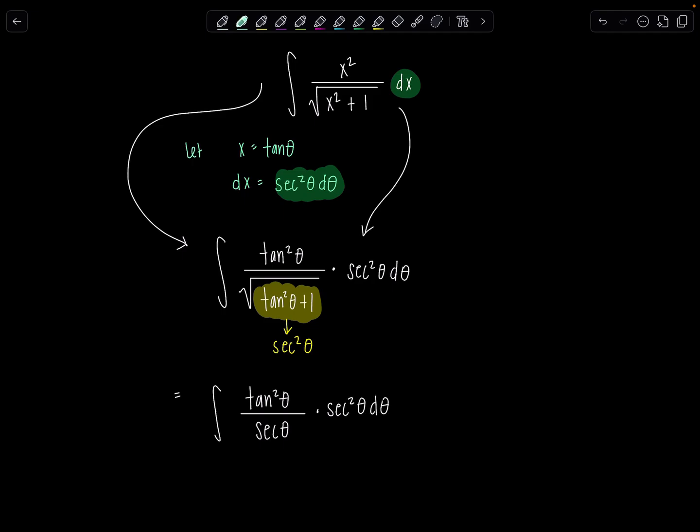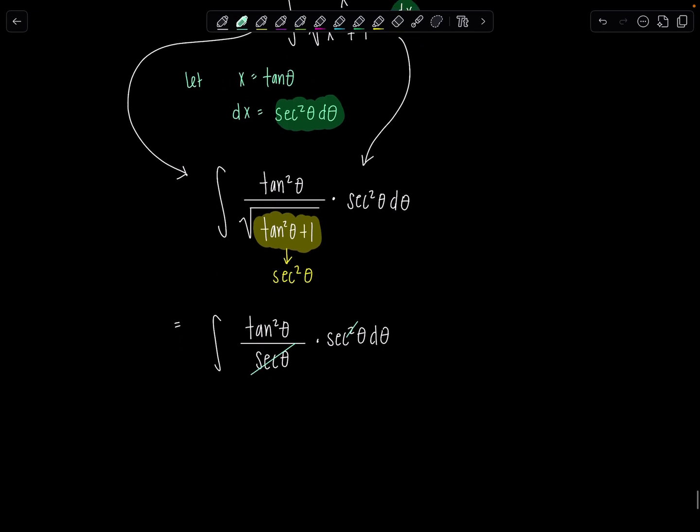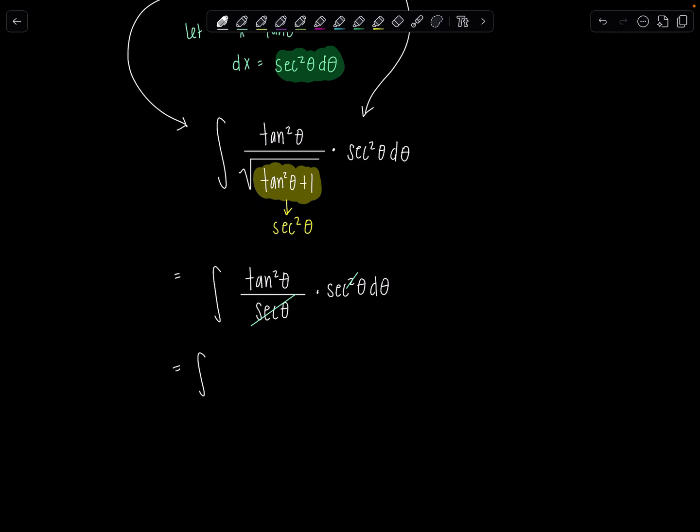So now you can just go ahead and cancel this secant theta with one of the secants up top. And then we're left with integral tan squared theta, secant theta d theta. And then this is where you kind of got to play around with your different options. So usually I first think, could I do u sub, right?